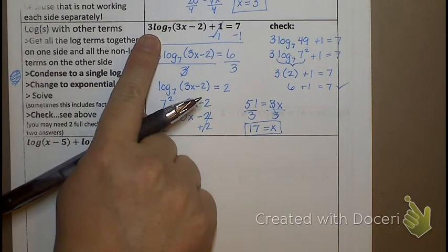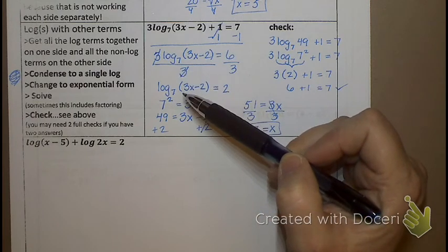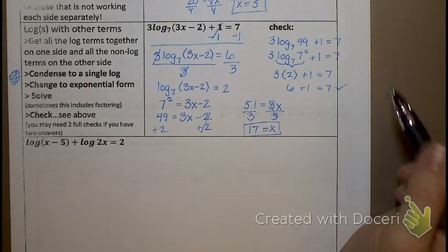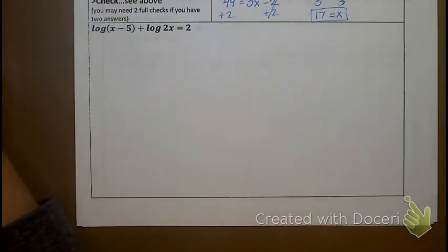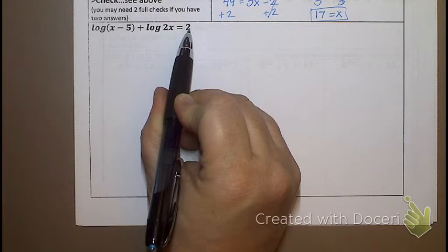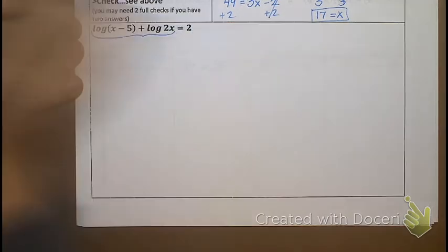So the process for one log is: get the log alone, move everything to the other side, then switch to exponential form. Now the next problem has more than one log. Can I write it as log equals log? No, because if I move one log over there's still a 2. So I want to get it down to one log first.